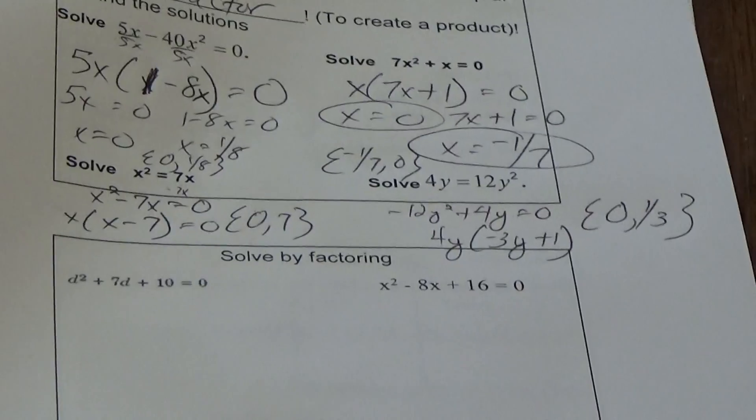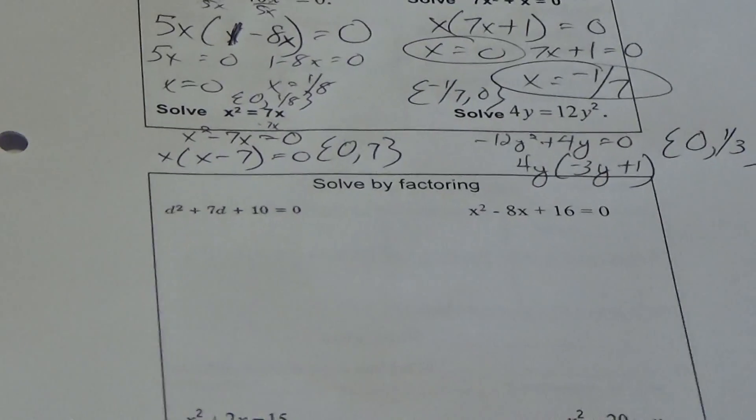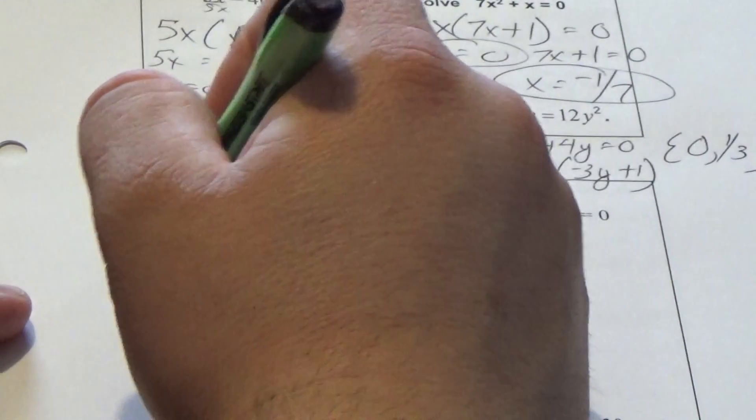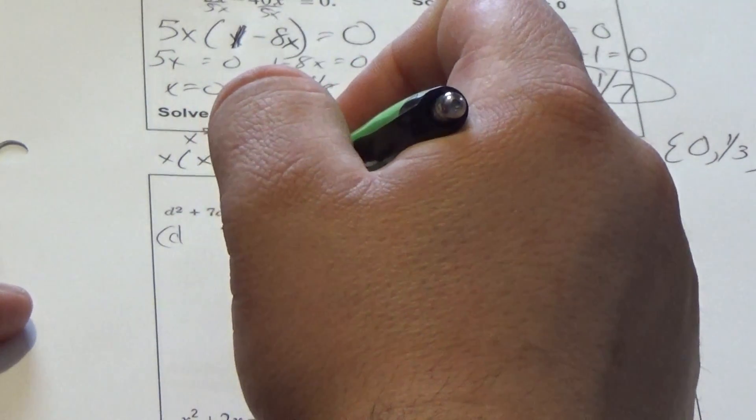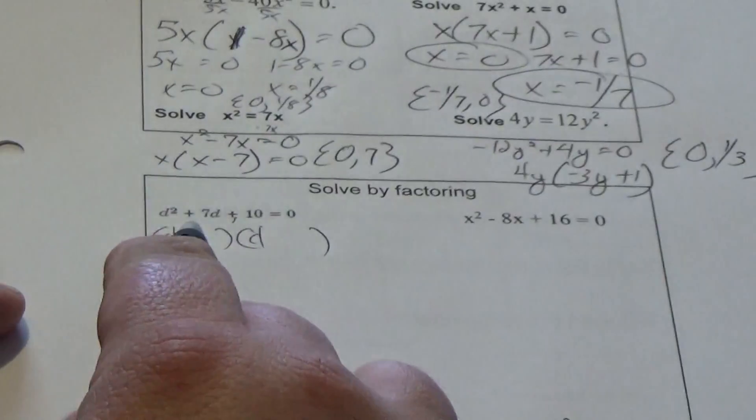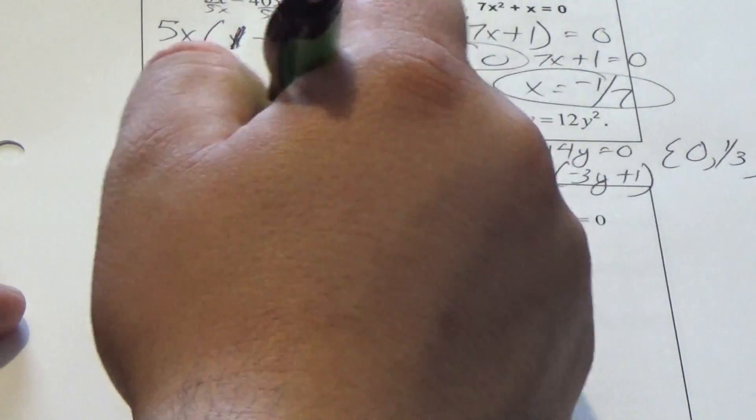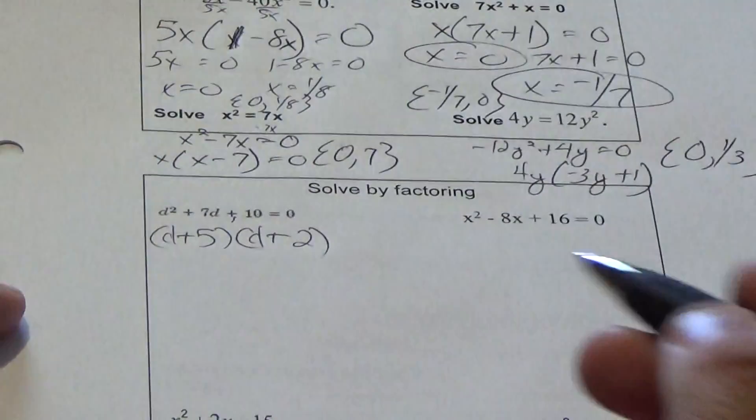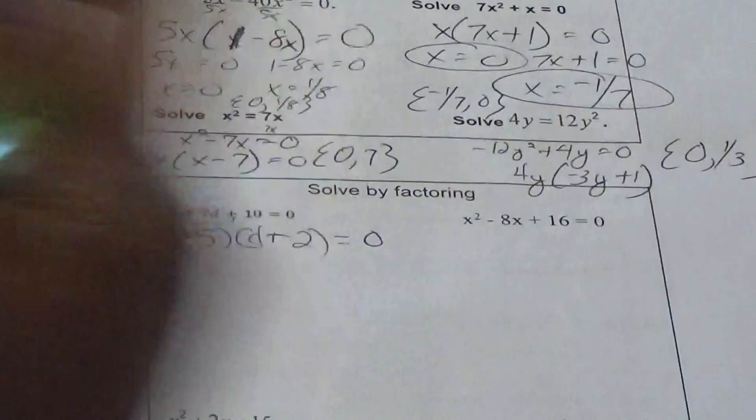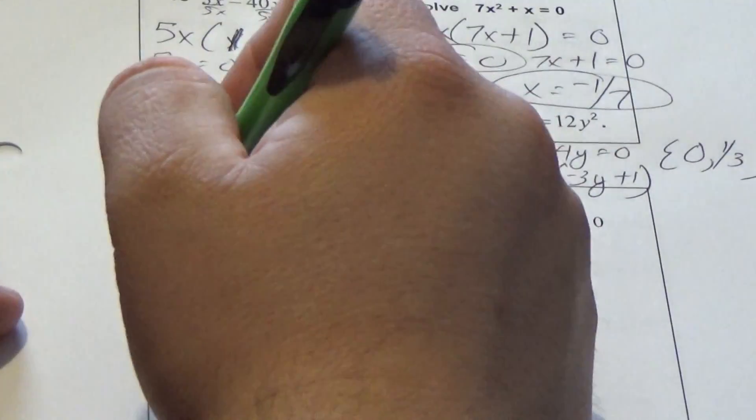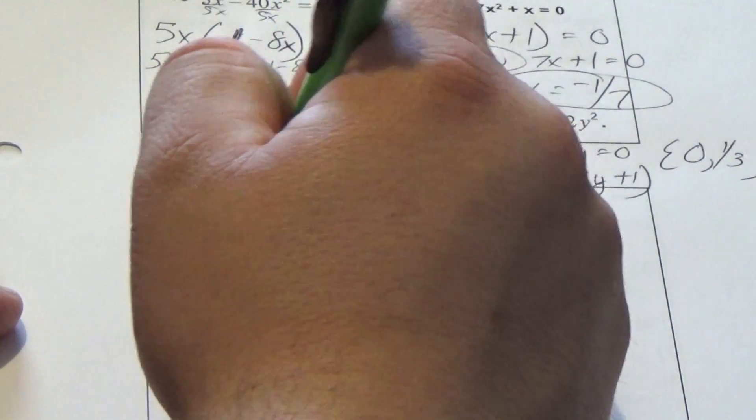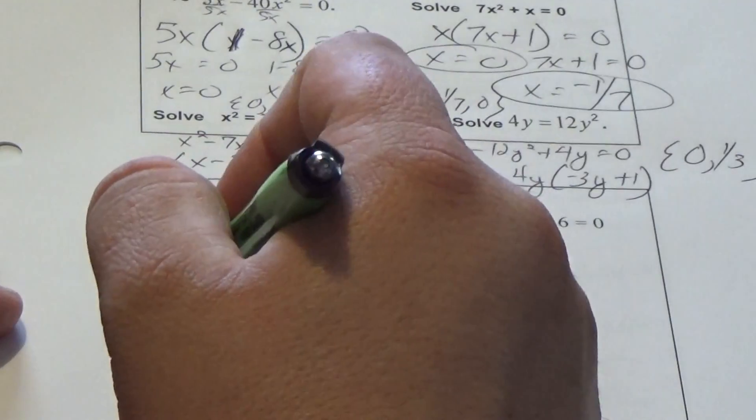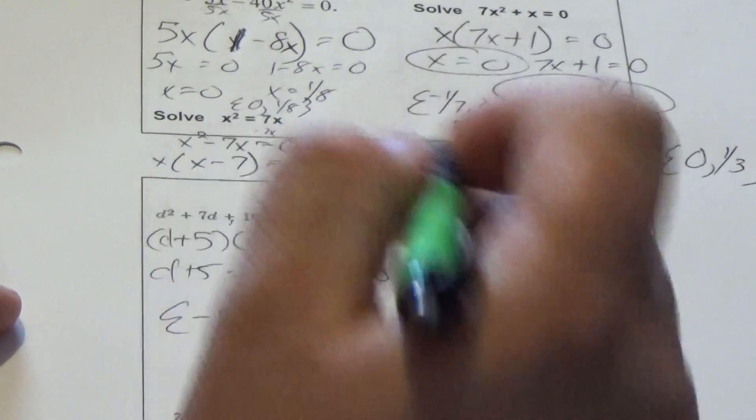Same thing happens here, so now I have to use teach me how to factor: parenthesis, parenthesis, d, d. Plus in the back means I double up. Plus in the middle means they're both positive. The factors of 10 that add to 7 are 5 and 2. Set it all equal to 0, so d plus 5 equals 0 and d plus 2 equals 0. My answers are {-5, -2}.